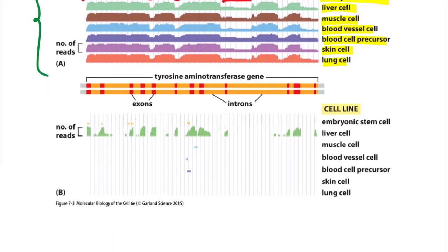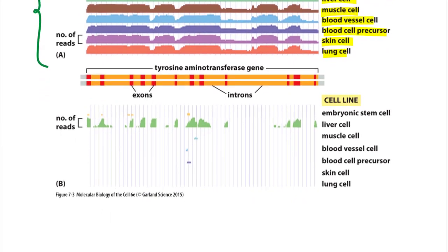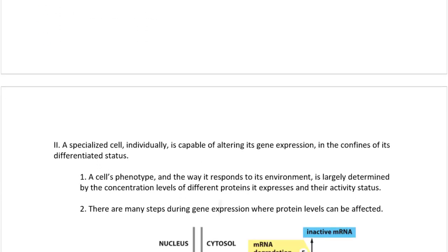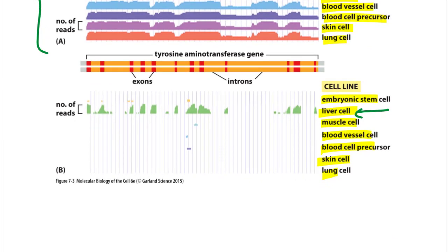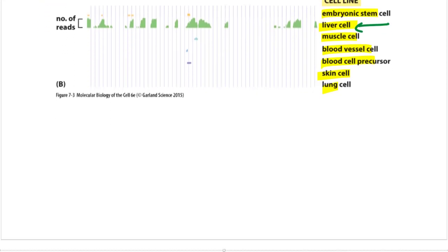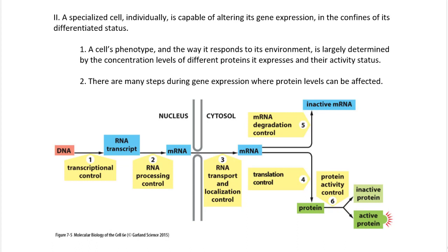Now looking at the tyrosine aminotransferase gene, which is a liver-specific gene: using the same cell lines as above, this gene is only being expressed in liver cells and not in any other cell type. During differentiation, the tyrosine aminotransferase gene is silenced in all other cell types but remains available for expression in liver cells. A specialized cell can only alter gene expression within the confines of its differentiated status — meaning only the genes that have not been silenced.